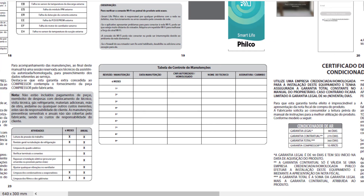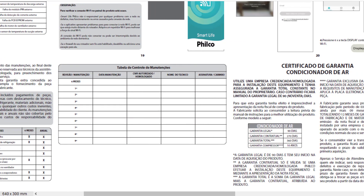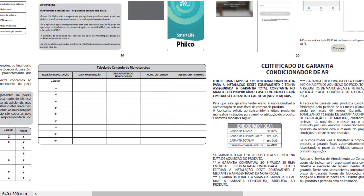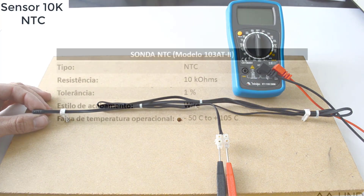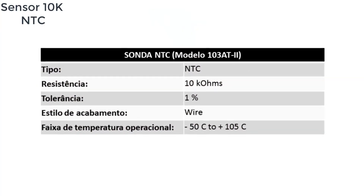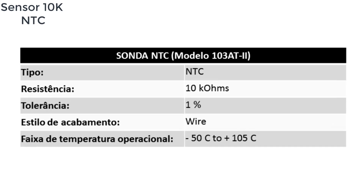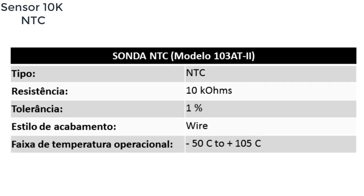Once you have defined which sensors and their types, you can proceed with the sensor testing procedure. Let's do a practical test using a 10K NTC temperature sensor. Remember that the NTC has a negative temperature coefficient, which means that as the temperature increases the resistance decreases, and if the temperature decreases the resistance increases.